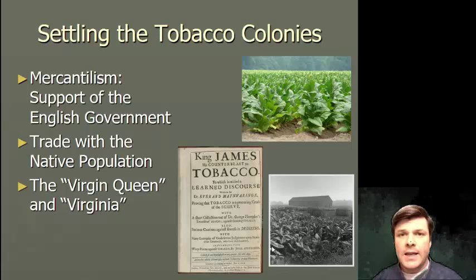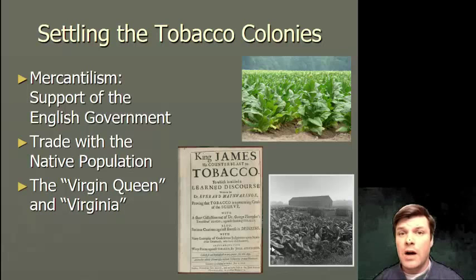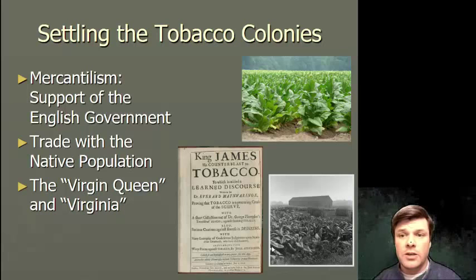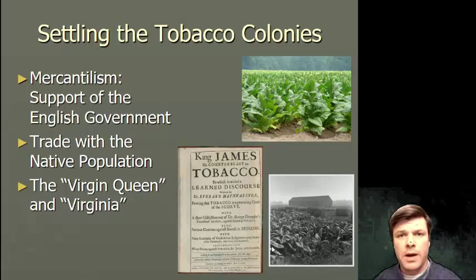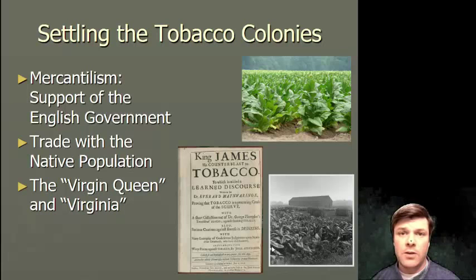The cash crop that would emerge in the English colonies, at least originally, would be tobacco. It was not the English that discovered tobacco — this was a Native American crop. This is what Pocahontas brought with her as part of her dowry in her marriage to John Rolfe: the knowledge and process of how to successfully cultivate tobacco. People couldn't wait to get out in the fields and start producing it, because this was a crop that grew very well in the Americas and sold even better in the European marketplace.